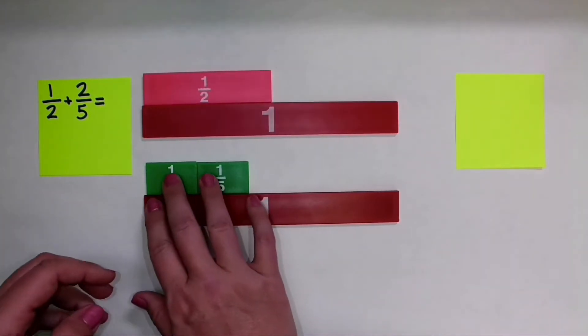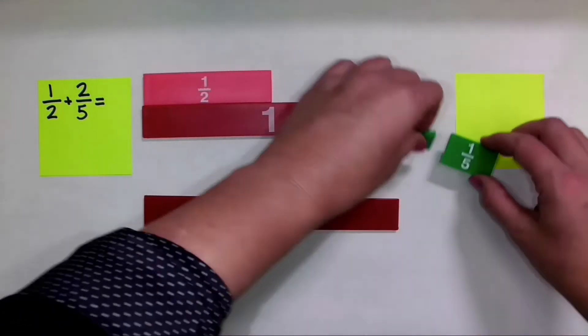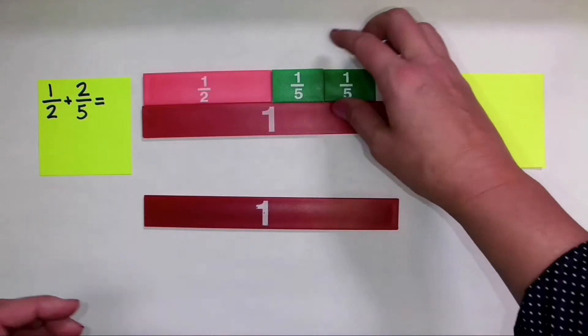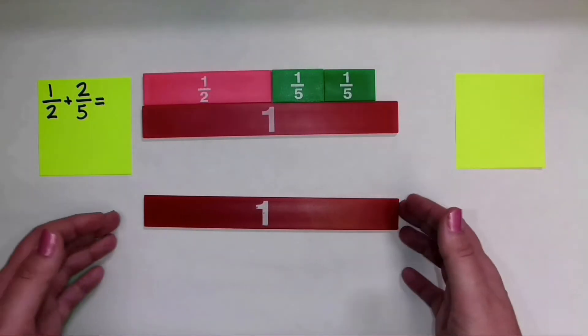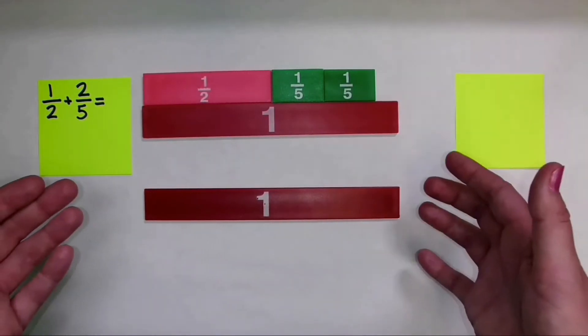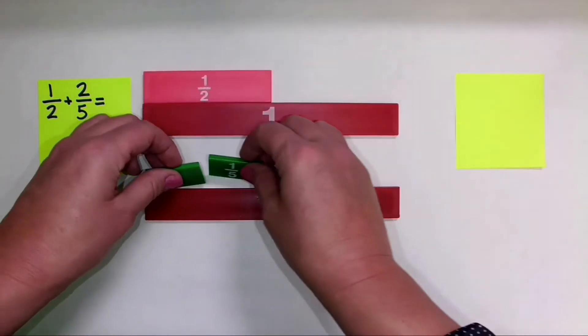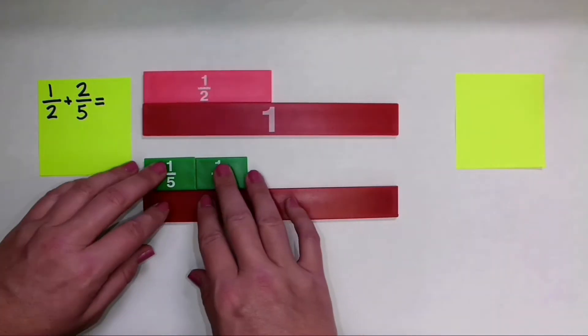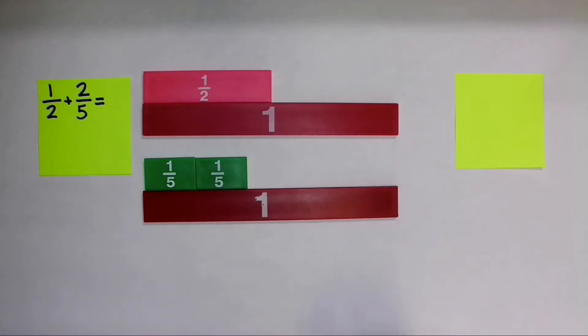Now I need to add these addends together. So I could take these two 1 fifth pieces and add them to 1 half. But it's kind of difficult to interpret what the answer might be. So one of the things that's very helpful to do here is to find common denominators or like denominators.